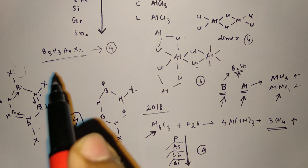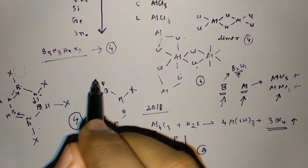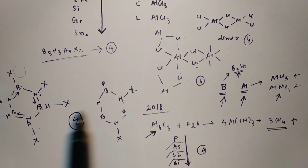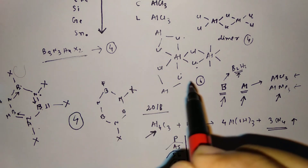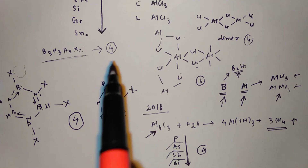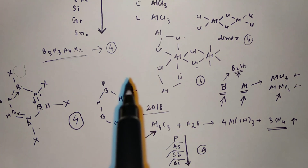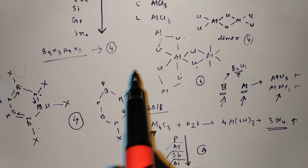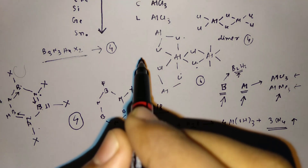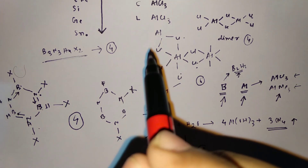One more important area for S and P block elements: hydrides, oxides, hydroxides, carbides, nitrides, and this kind of compound formed by S and P block elements — and their group trends, including melting point, boiling point, and solubility comparisons.